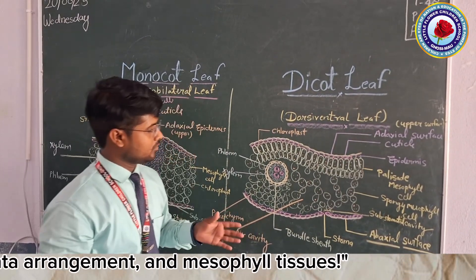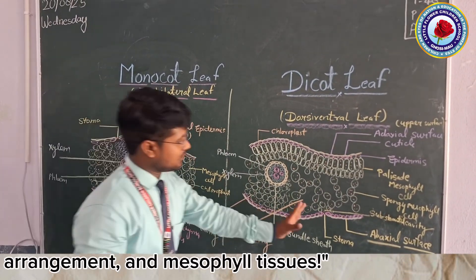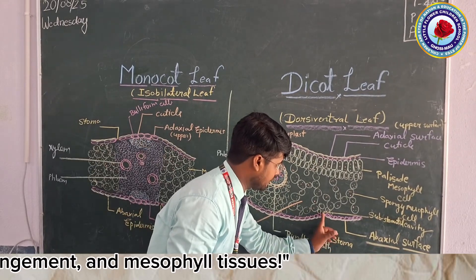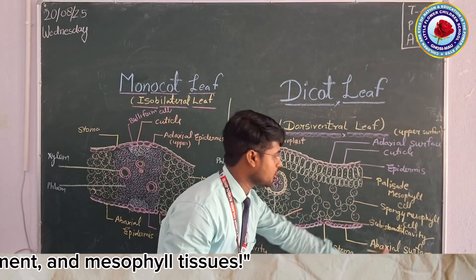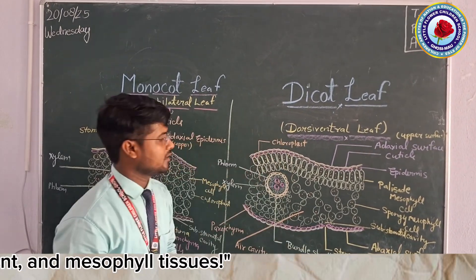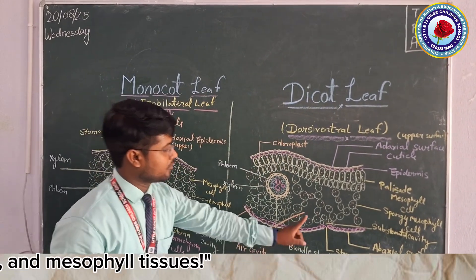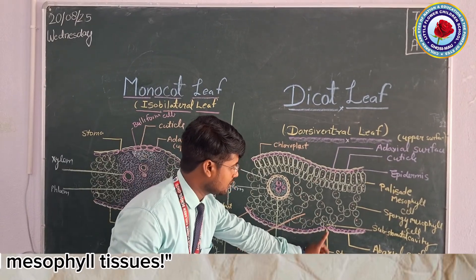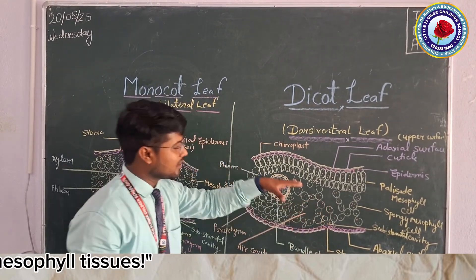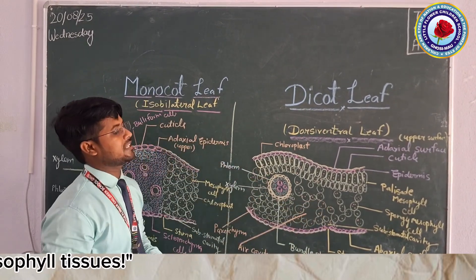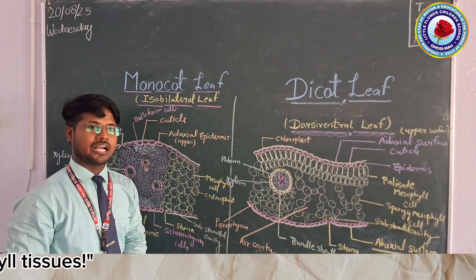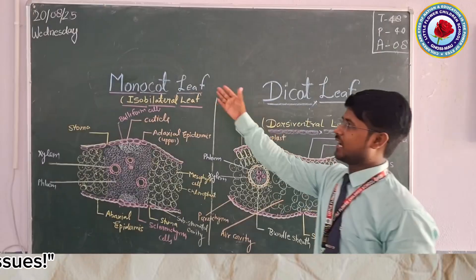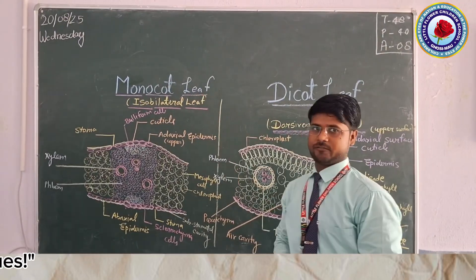These are the stomata, which have a cavity known as the substomatal cavity. Through this pore, exchange of gases takes place in the leaf and throughout the plant body.